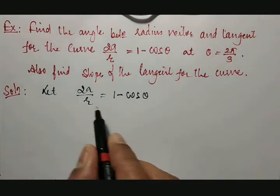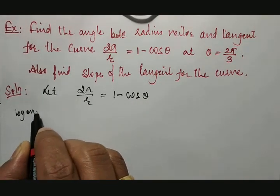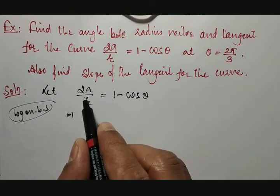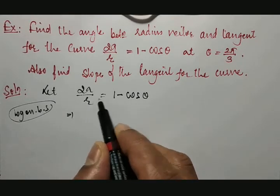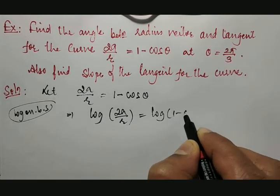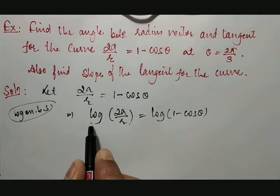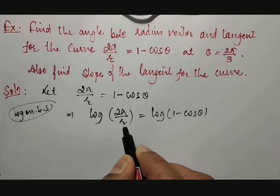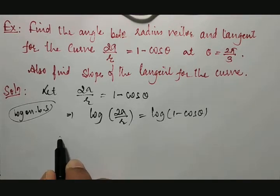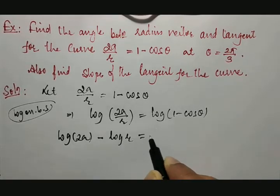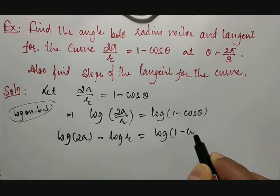Since this is a polar curve, we apply log on both sides. Taking log on both sides, log(2a/r) = log(1 − cos θ). This can be written as log(2a) − log(r) = log(1 − cos θ). The constant term log(2a) will become 0 upon differentiation, so we differentiate both sides with respect to θ.